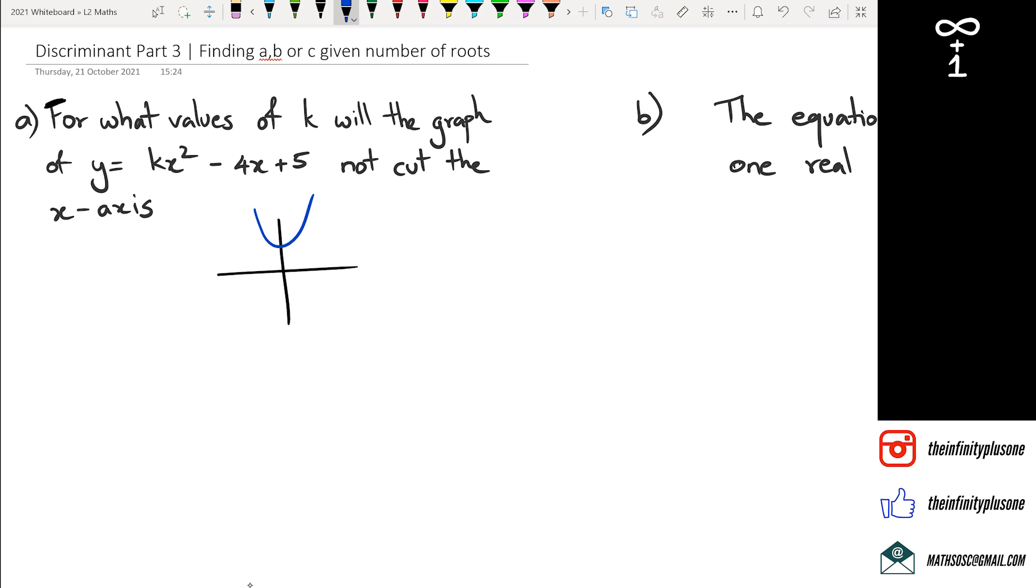Now, if you think about this, we know that if it's not cutting the x-axis, the discriminant has to be less than 0. So this is something that we talked about in the previous videos. So the discriminant has to be less than 0. So in other words, b squared minus 4ac has to be less than 0.